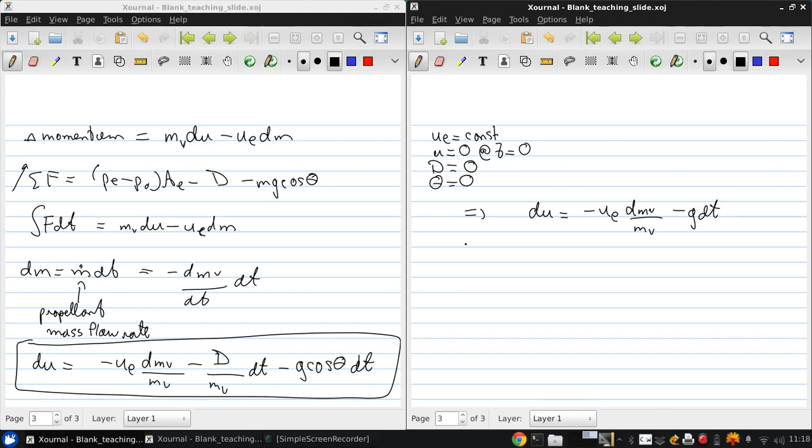And if we integrate that, we get that the final velocity is minus ue times natural logarithm of mv over mv naught, which is the mass of the vehicle at the initial time, minus g times the amount of time that's passed.